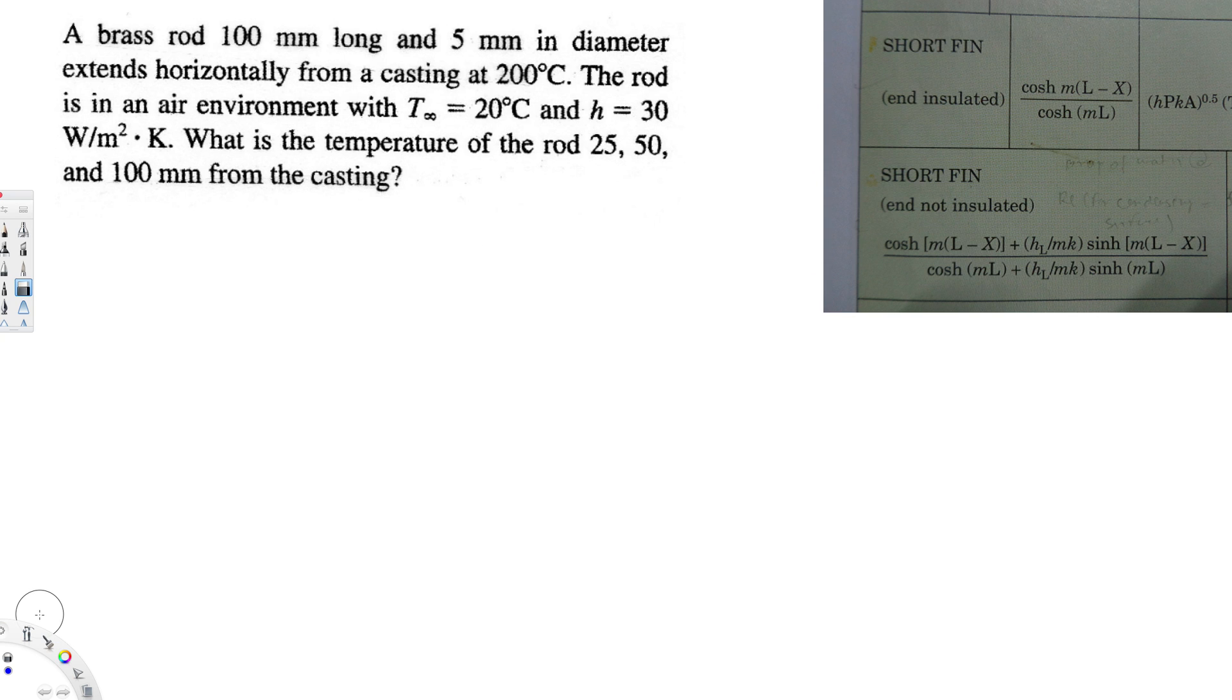What's going on guys, let's do this problem. A brass rod 100 millimeters long and 5 millimeters in diameter extends horizontally from a casting at 200 degrees Celsius. The rod is in an air environment with T infinity equal to 20 degrees Celsius and h equal to 30 watts per meter squared Kelvin. What is the temperature of the rod 25, 50, and 100 millimeters from the casting?